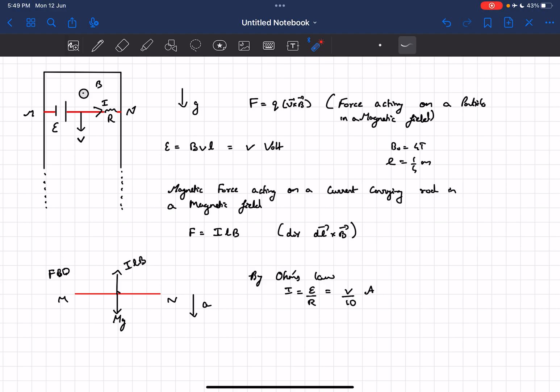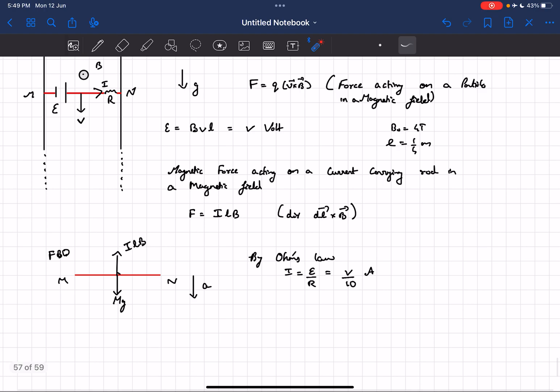Now the magnetic force acting on a current carrying conductor or rod in this case which is left in a magnetic field is simply ILB, provided the current I is perpendicular to the magnetic field B, and the direction of the force could be calculated by computing dl cross B. This would be the direction of the magnetic force, and dl vector is along the direction of current by the way. If you calculate dl cross B you'll get it as upwards.